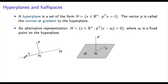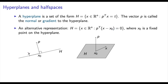Geometrically, in the one-dimensional case the hyperplane corresponds to just a point. In two dimensions, when we have variables x1, x2, a hyperplane corresponds to a line, and this line is orthogonal to the normal vector p. In three dimensions, we have the usual notion of a plane, for which p is orthogonal to every vector that belongs to the plane, and the plane contains the point x0. When n is greater than 3, the concept of a hyperplane generalizes the notion of a plane to higher dimensions.